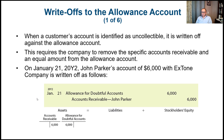As you can see, both accounts are under assets. The allowance for doubtful accounts is a contra asset account with a credit nature — we're reducing it, so it's debited. We're also reducing the accounts receivable for John Parker. Nothing is affecting liabilities or stockholders' equity in this case.